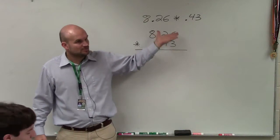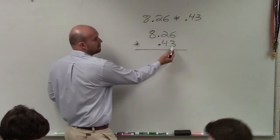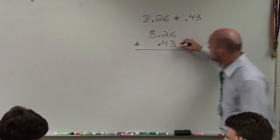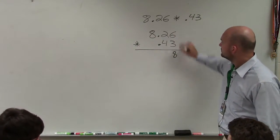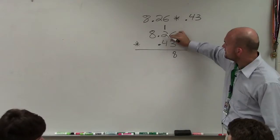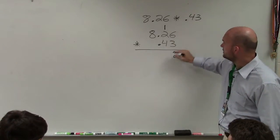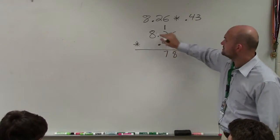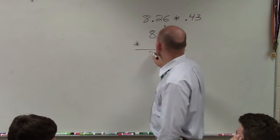Then when we multiply, we're just going to follow the same algorithm that we've done before for multiplication of multi-digits. 3 times 6 is 18, carry the 1 over. 3 times 2 is 6, 6 plus 1 is 7. 3 times 8 is 24.